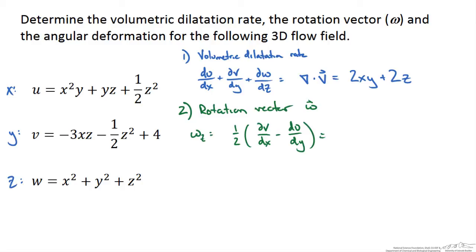We go back to our velocity equations. We take the derivative of the y velocity with respect to x, then we subtract out the partial derivative of the x velocity u with respect to y. This gives us the rotation around z equal to negative 2z minus one-half x squared.